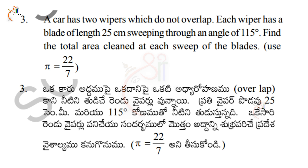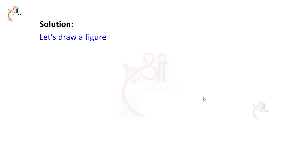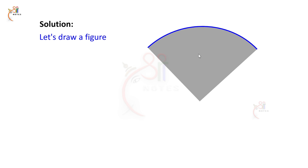We have a car with two wipers. They have a swipe — they can clean an area, but they cannot overlap. Each wiper sweeps a 115-degree angle and the length of the wiper is 25 cm. The swept area is a sector shape. Let's draw a figure.